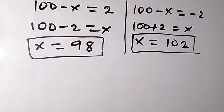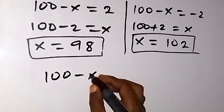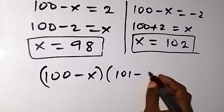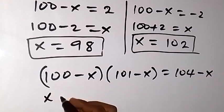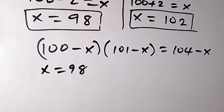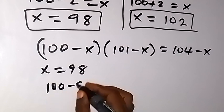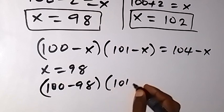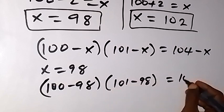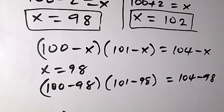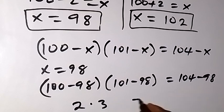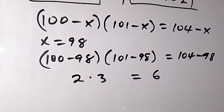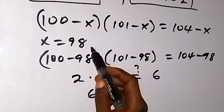To check whether these solutions are correct, we use: (100 - x)(101 - x) = 104 - x. Putting x = 98: (100 - 98)(101 - 98) = 104 - 98, which gives 2 times 3 equals 6. Left hand side: 2 × 3 = 6, right hand side = 6. So 6 equals 6, confirming x equals 98 satisfies the problem.